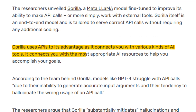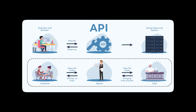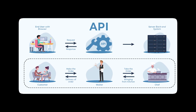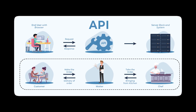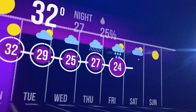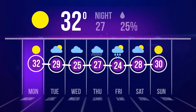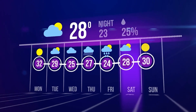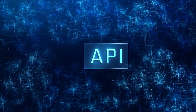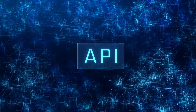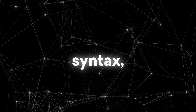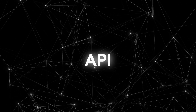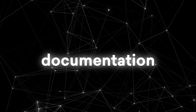So, what is Gorilla? Gorilla is a large language model that can write code to call APIs. APIs are application programming interfaces that allow different software applications to communicate and exchange data. For example, if you want to use a weather app on your phone, the app needs to call an API from a weather service provider to get the latest information. APIs are very useful and powerful, but they can also be complex and difficult to use. You need to know the exact syntax, parameters, and options of each API and keep track of updates and changes in the documentation.